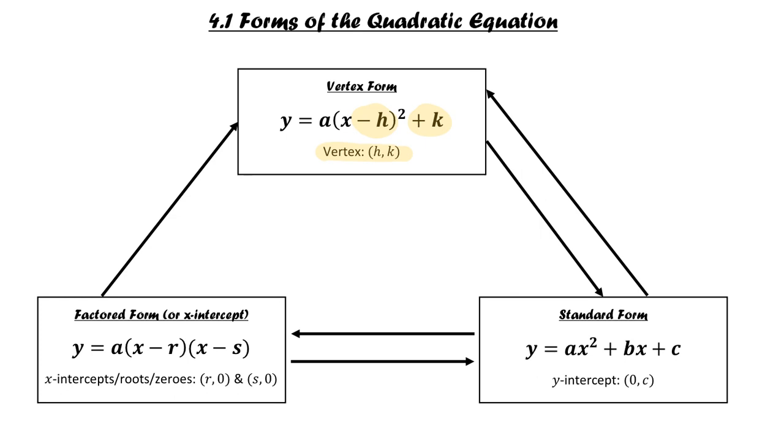The next type is the standard form, which you saw in our algebra unit. This is the fully expanded version where we have three terms, a trinomial with the highest exponent being 2. The key piece of information we get from this is the y-intercept. So the constant c is our y-intercept at (0, c).